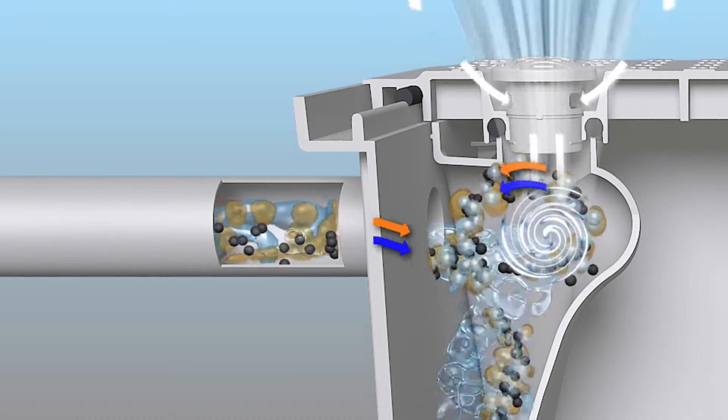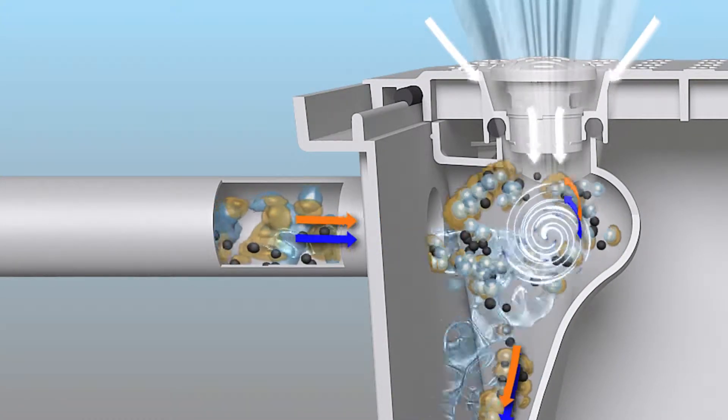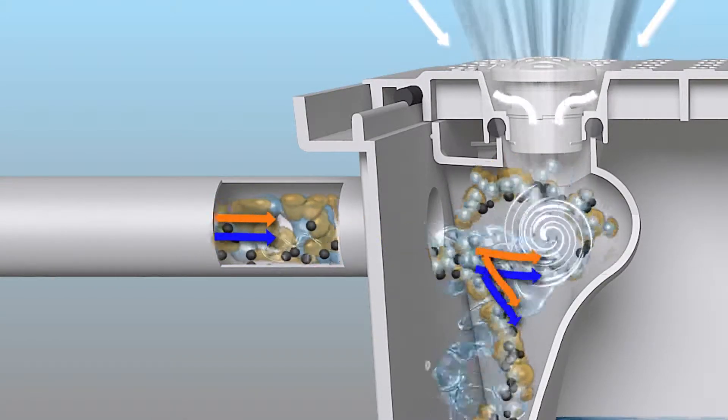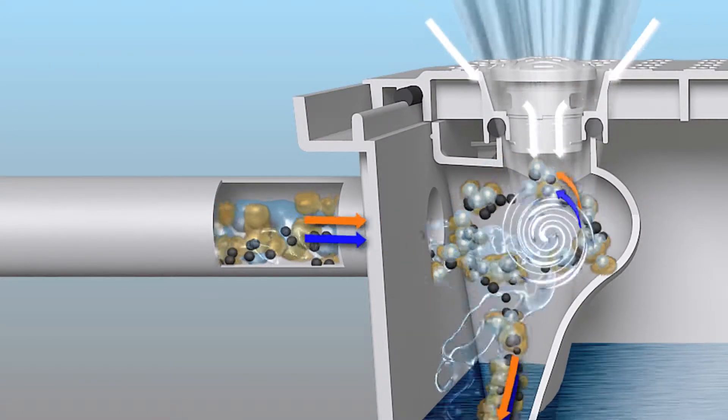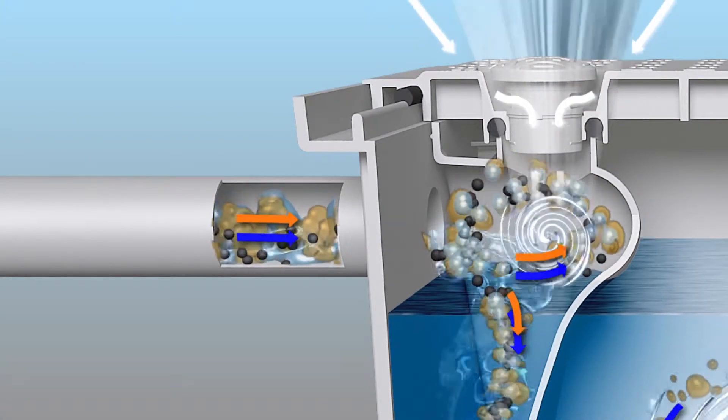The sewage mixed with the air causes a vortex phenomenon because of its friction with the curved surface of the inlet along with buoyancy. All of these effectively facilitate the separation of the sewage into fat and oils and sediment.